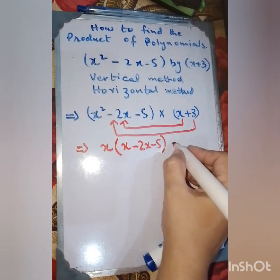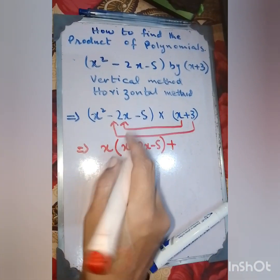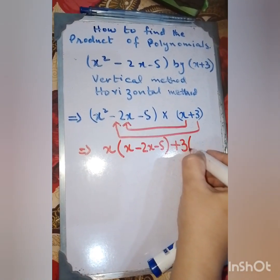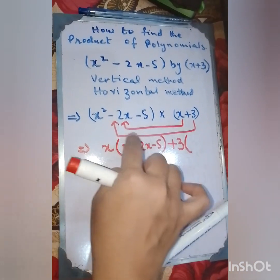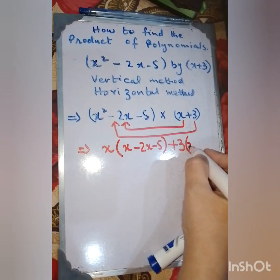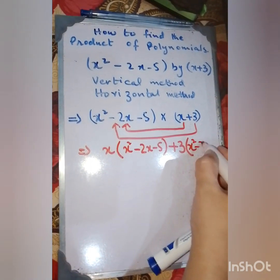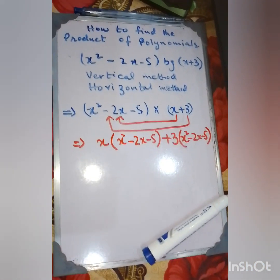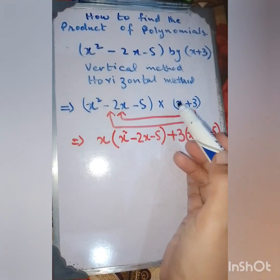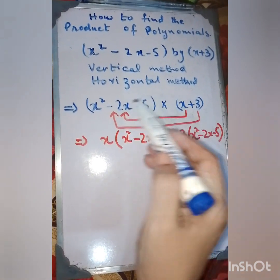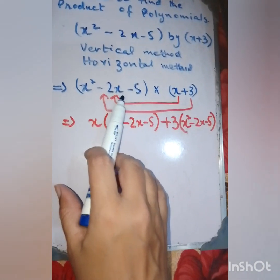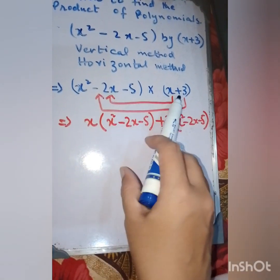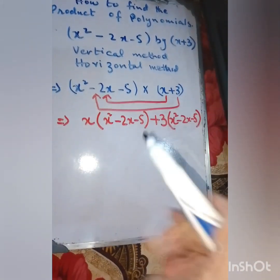We carry the plus sign as it is, then write 3 as a coefficient outside, and copy the whole bracket again: x squared minus 2x minus 5. Whatever the components are, you must multiply each and every single component with the whole bracket. I picked the expression with fewer terms — this one has two terms and that one has three terms.